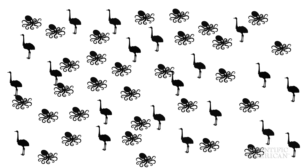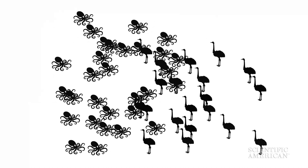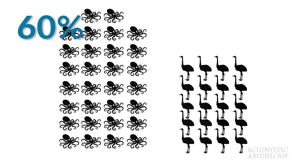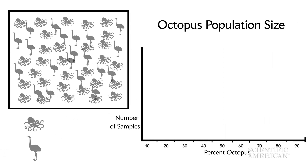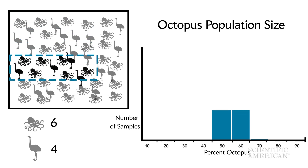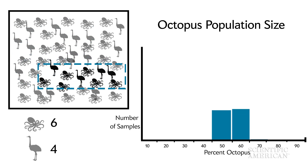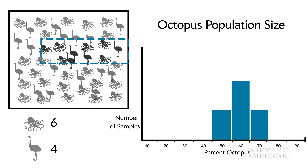If we wanted to know how many octopuses and how many ostriches there were in this group, we could count each of them and learn octopuses make up 60% of the population. But it's impractical to get in touch with every individual, so instead we can sample a subset and extrapolate with statistics. If we look at 10 animals, most of the time we'll count 6 octopuses — sometimes 5 or 7 — but it would be rare to find a sample where only 2 animals were octopuses.